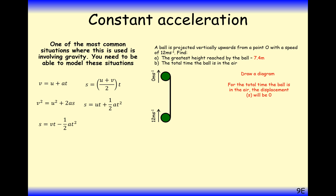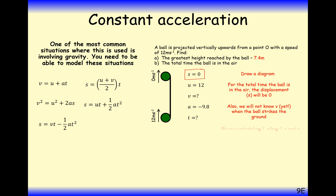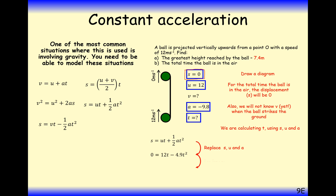Part B asks for the total time the ball is in the air. The ball goes upwards then comes back down again. If it returns to where it started, the displacement is zero. We use S equals UT plus half AT squared with S equals zero. This gives zero as one answer — where it started — or 2.4 seconds as the total time of flight.